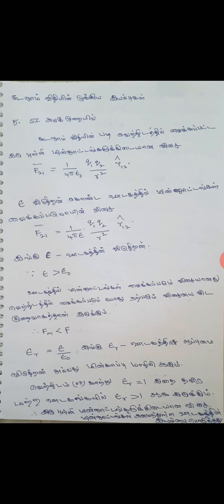Epsilon divided by epsilon naught. Epsilon divided by epsilon. Epsilon is the second one. Epsilon is the second one. Epsilon is the second one.